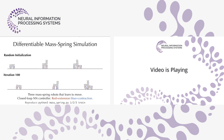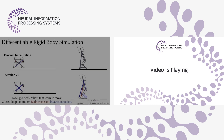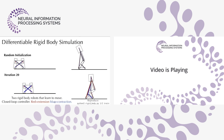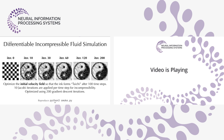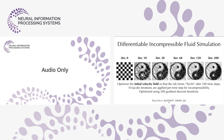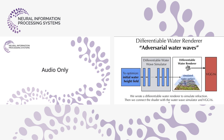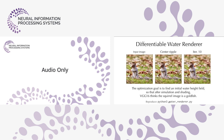Here's a mass-spring system simulation where the mass-spring robot learns to move to the right using a closed-loop neural network controller. Here are two rigid body robots. In another example we optimize an initial velocity field so that a fluid simulation forms a Taichi pattern after 100 time steps. My favorite example combines a differentiable water wave simulator with a differentiable water renderer, feeding the result into VGG16.